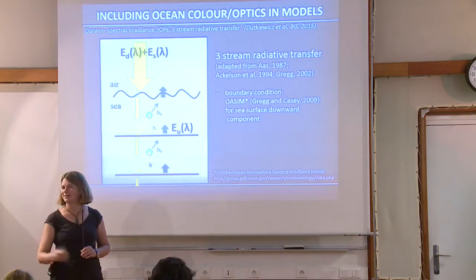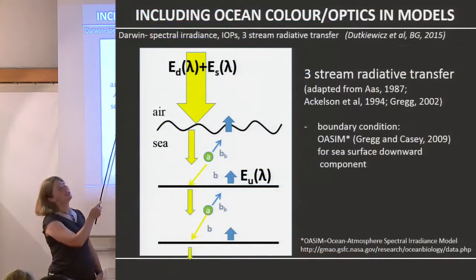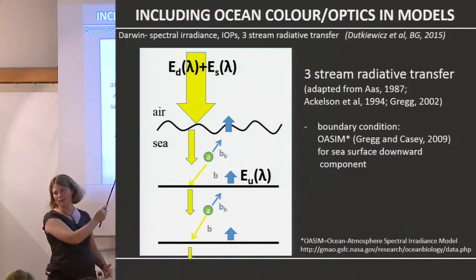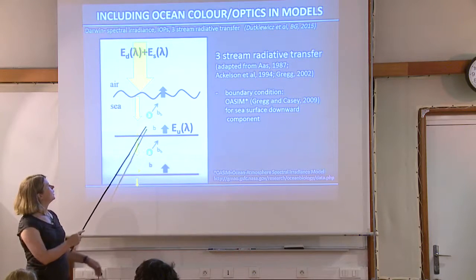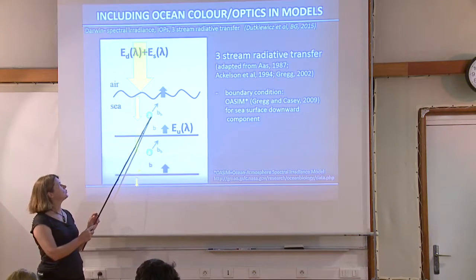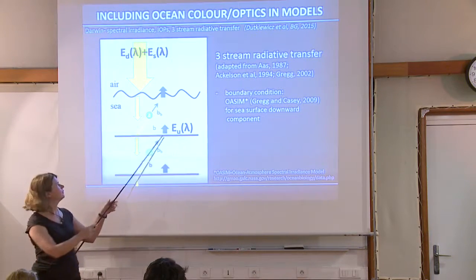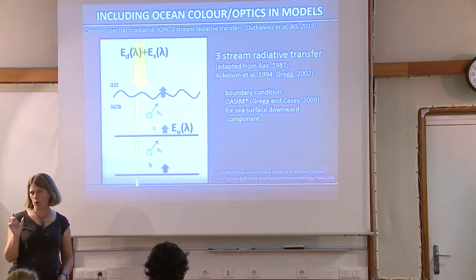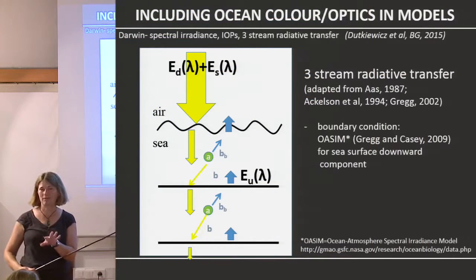The three-stream model: we have a downward direct stream and a downward diffuse stream — two streams coming in — and we resolve an upward stream as well. We have absorption and scattering. The idea is that when you scatter, you go into the diffuse — either going down with the diffuse stream or scattering upwards with the upward stream. This work is adapted from Aas 1987, Eccleston 1994, and what Watson Gregg has done in his model.